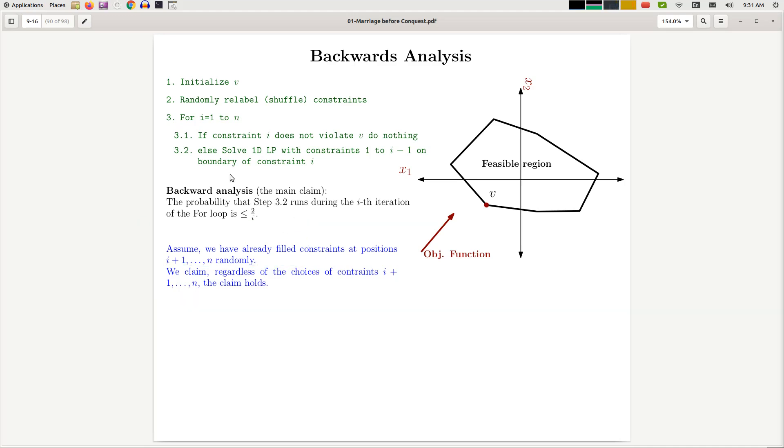So now instead of proving this main claim, we want to prove this blue claim over here. So let's focus on this. So imagine that I look at the constraints 1 to i. So let me rephrase this claim. For the choice of constraints i+1 up to n, these choices have been made, have been already filled in. So what is missing here is the choice of constraint i.